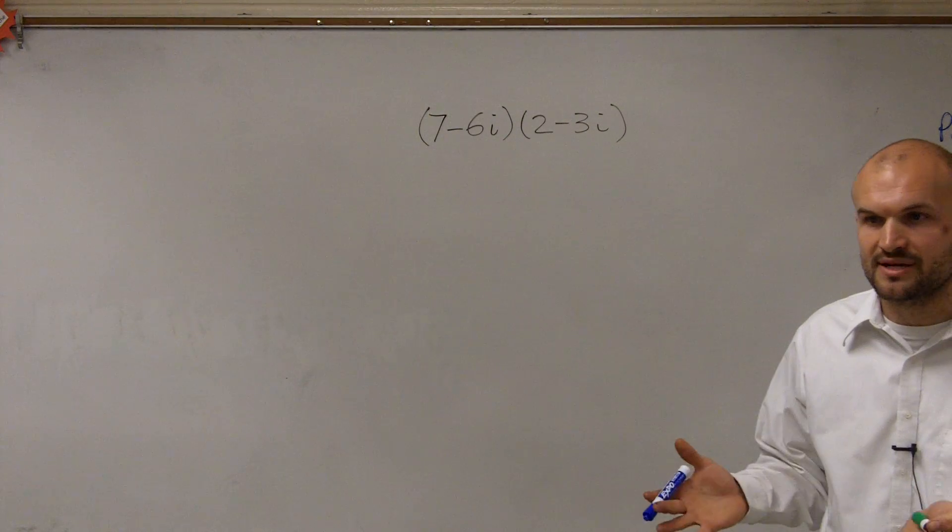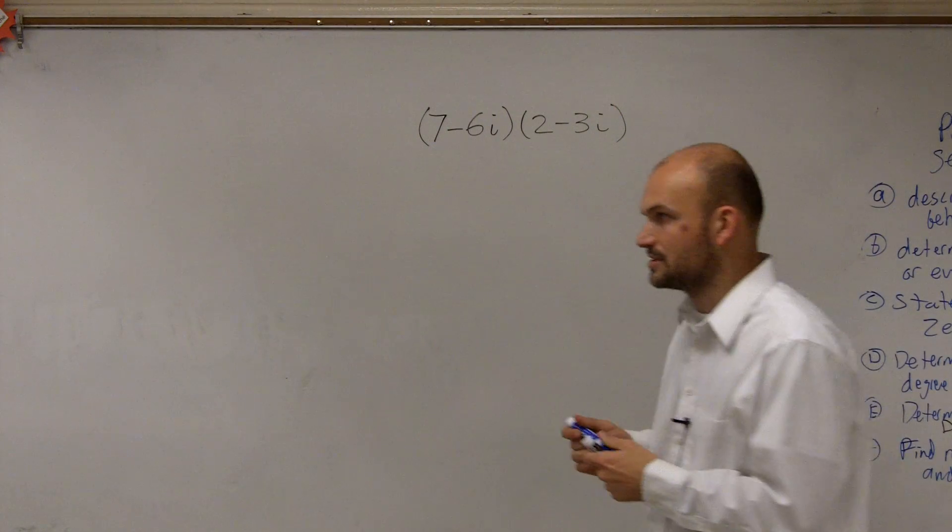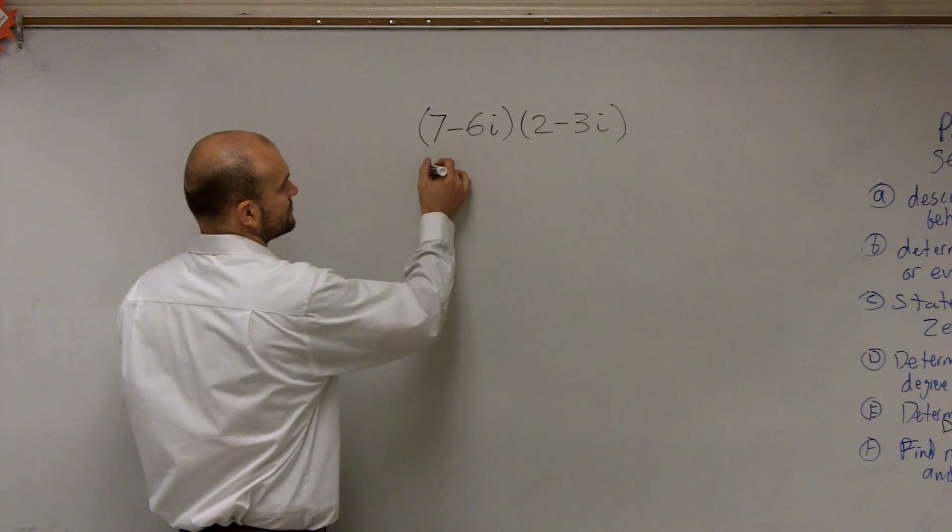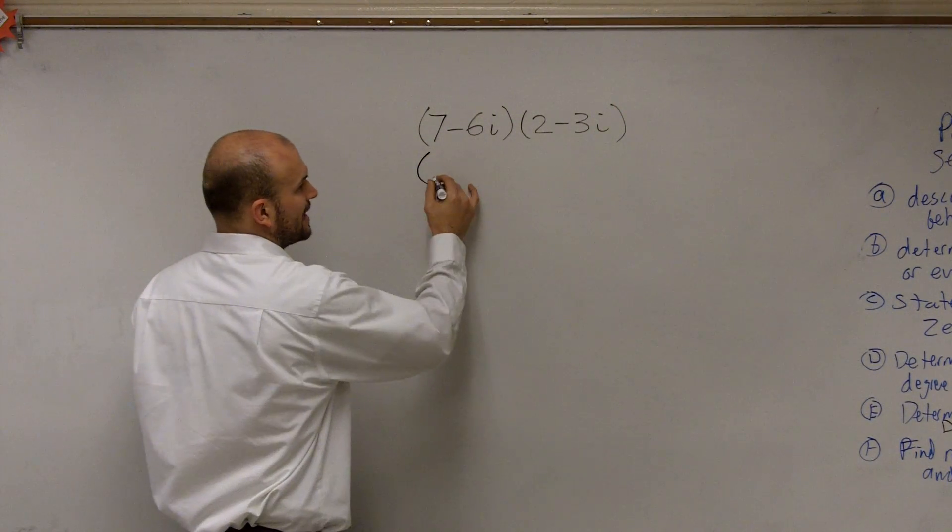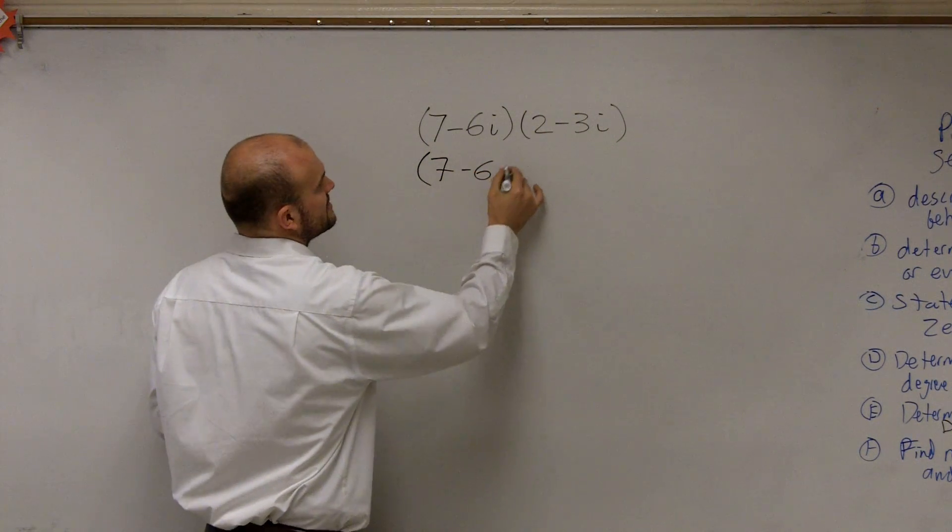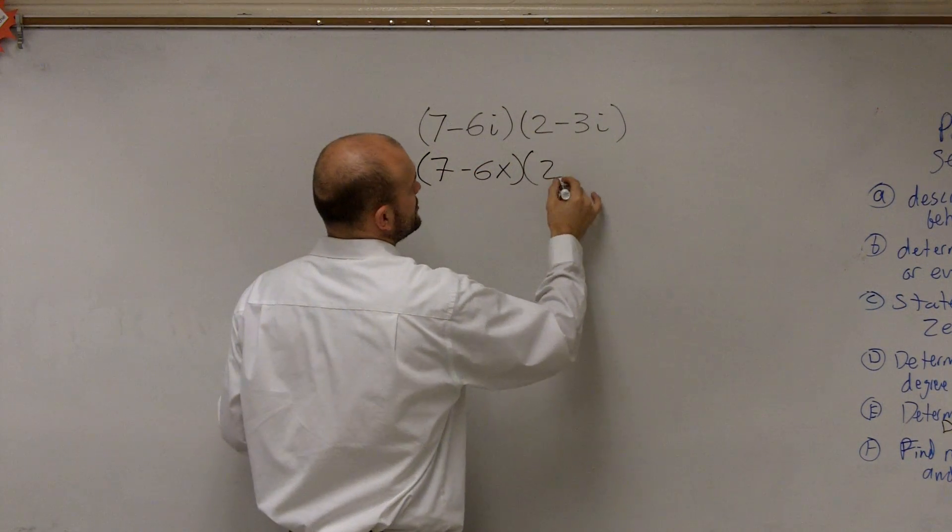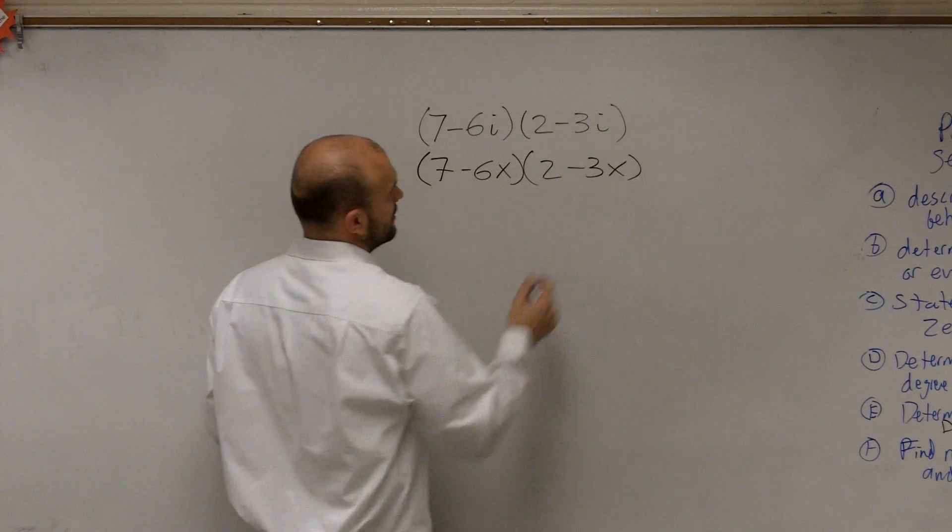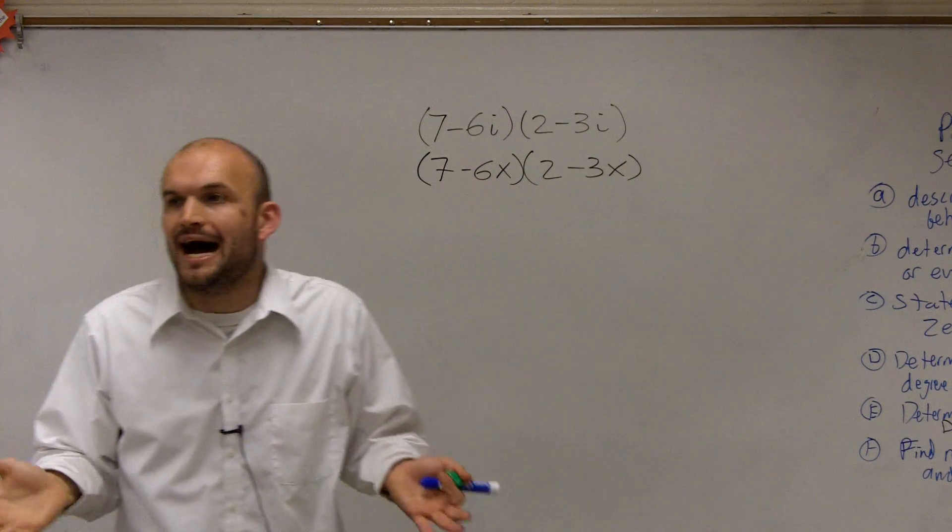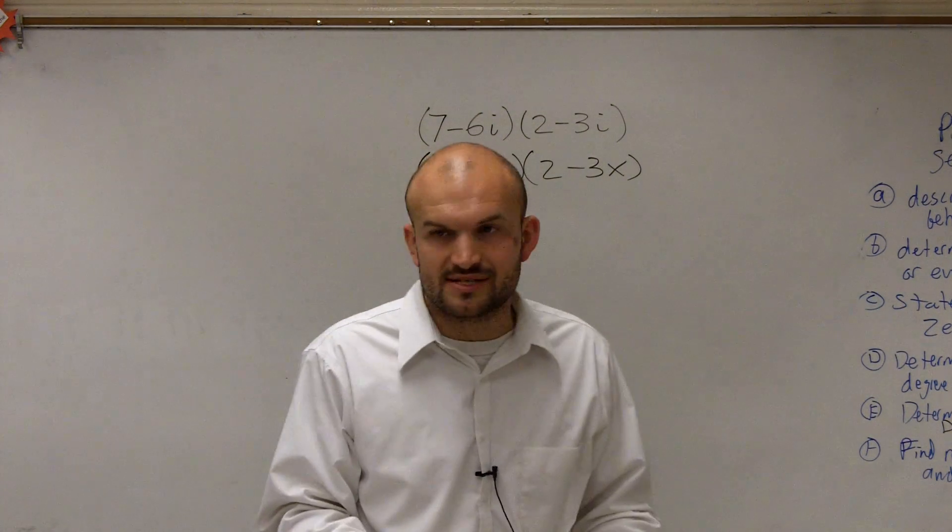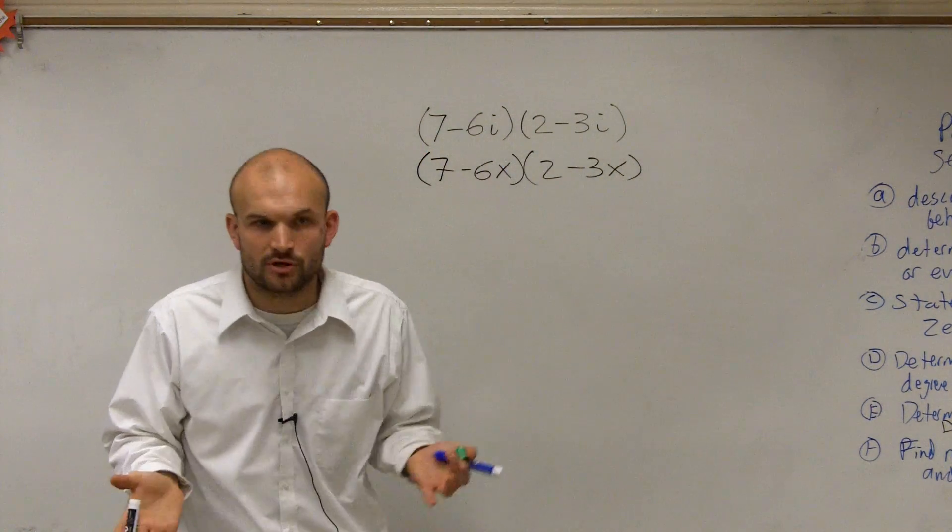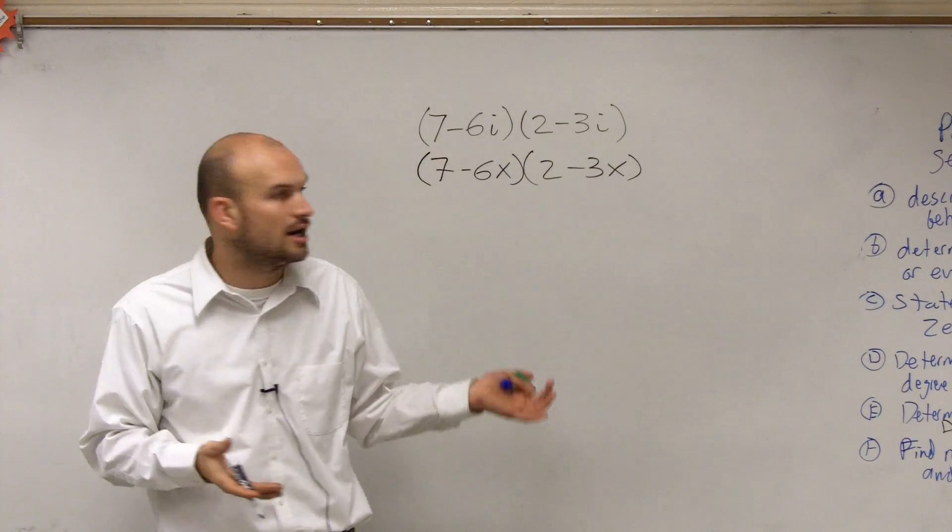This has a lot of the same properties of when we just multiplied polynomials. So what I want you guys to think about is when you're multiplying, think of this as 7 minus 6x times 2 minus 3x. Just think about it. Forget about the i for a second and forget about all the properties of i. Just treat it like a variable, and our most common variable that we could use was x.